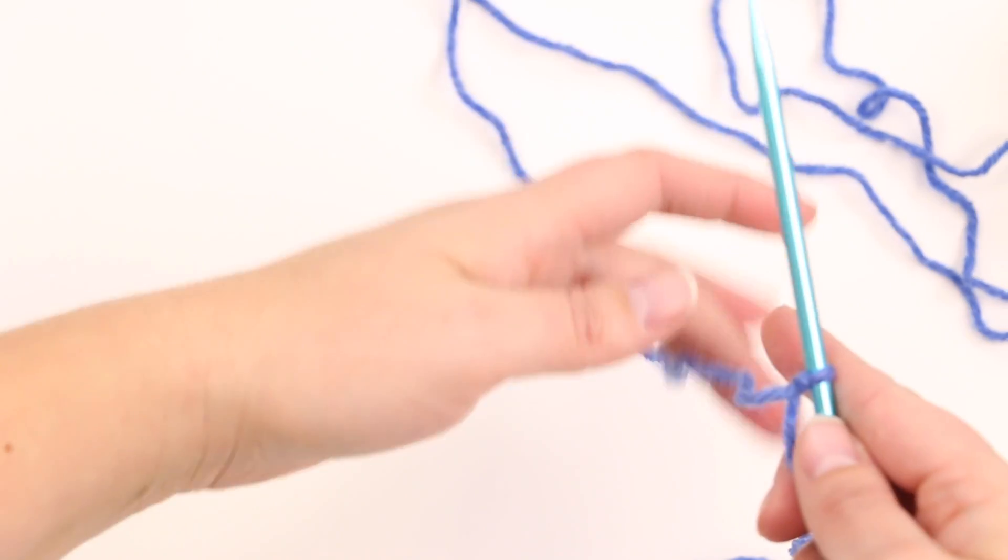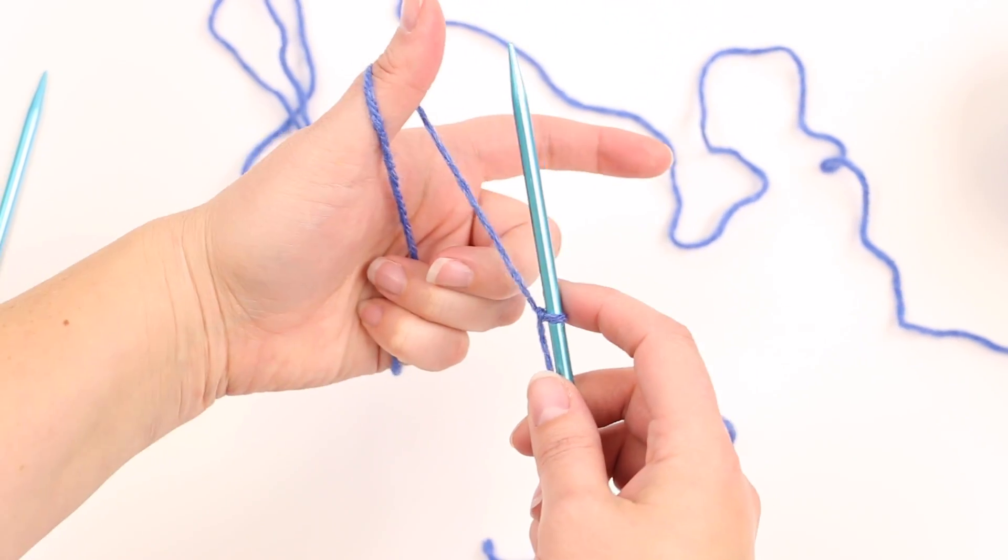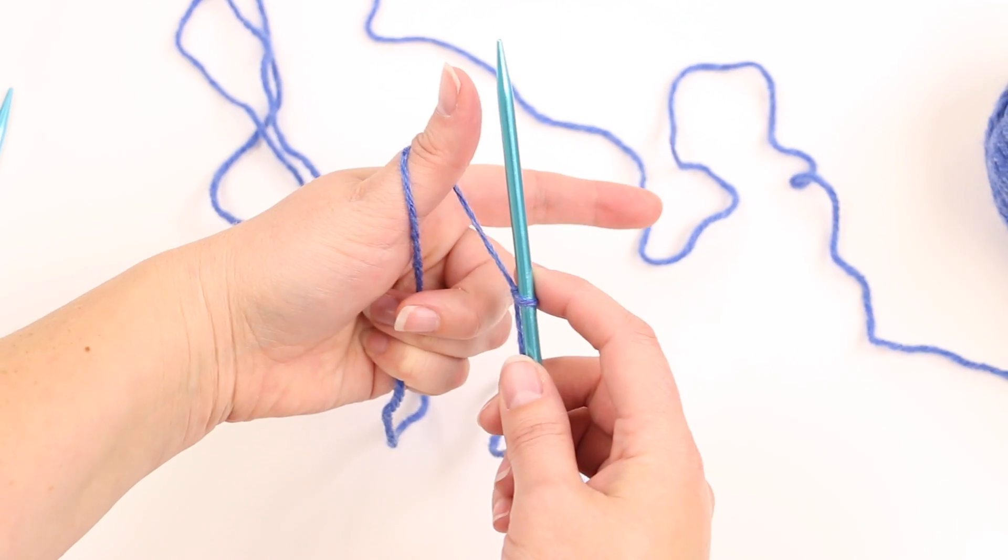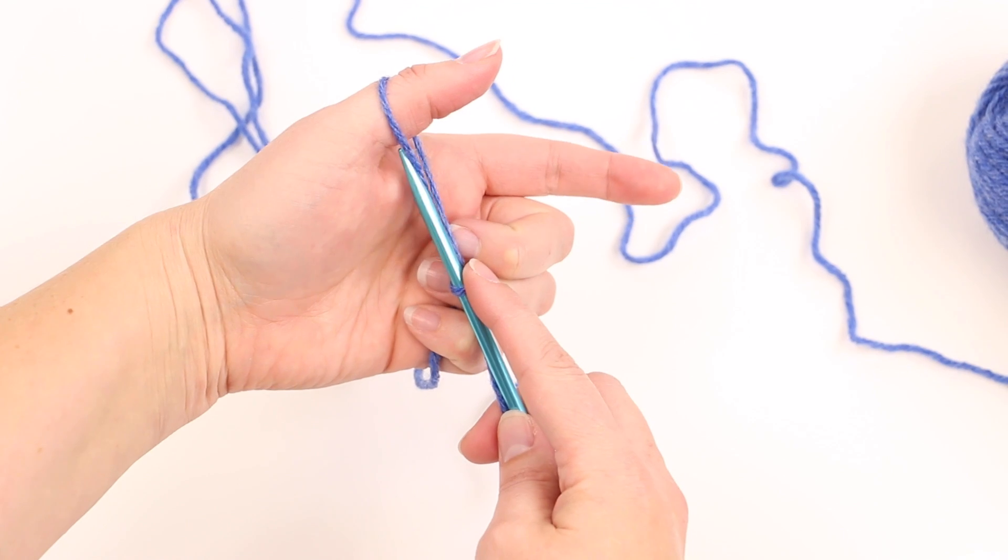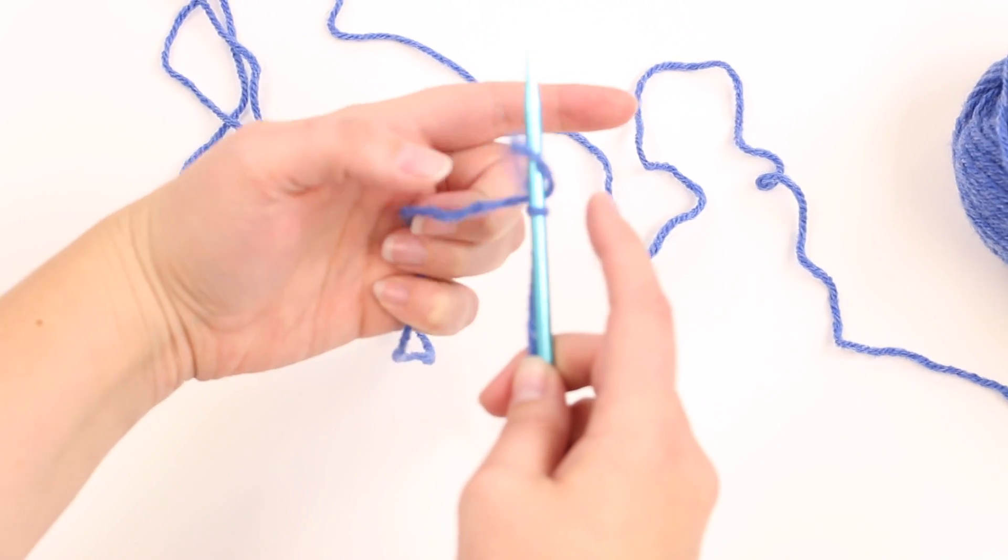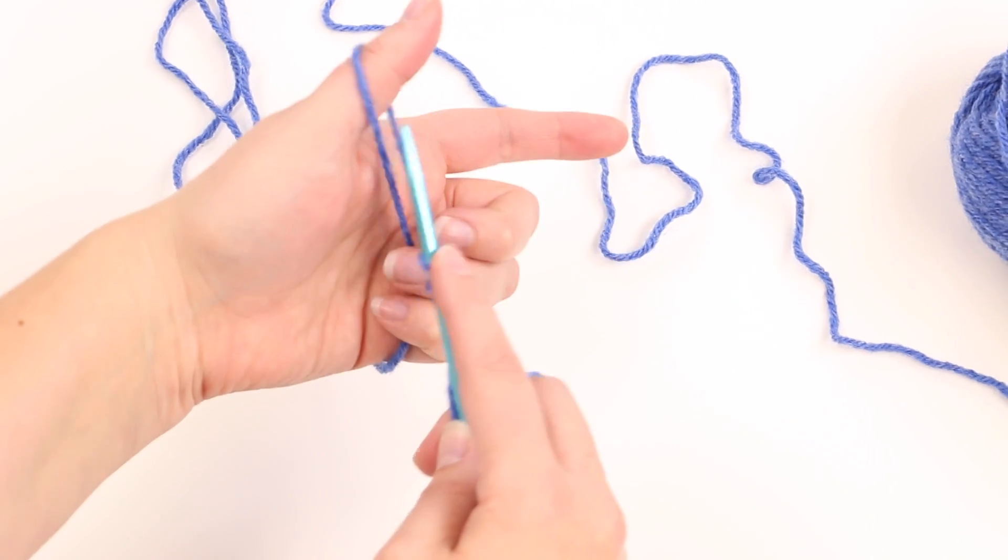And take your yarn that is attached to your ball here and make a loop over your thumb. So see, I just went under the yarn and made a loop and we're going to stick our needle into that little hole that we made there and pull it down.